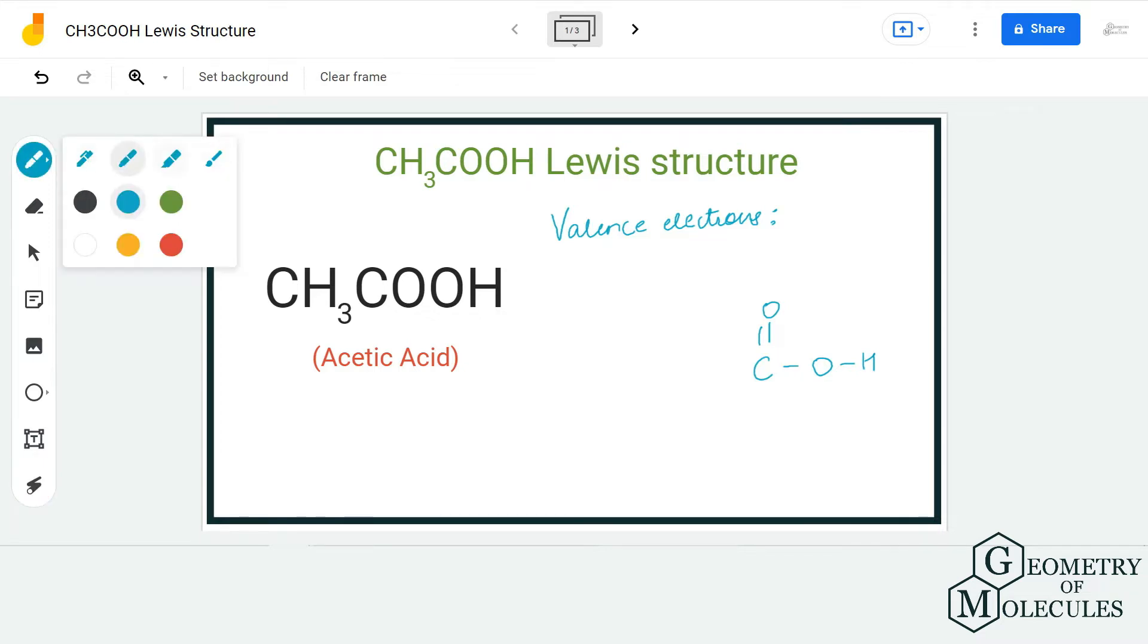To find the total number of valence electrons it's quite easy because carbon has four valence electrons in its outer shell, each hydrogen atom has one valence electron in its outer shell.